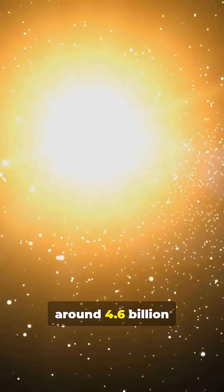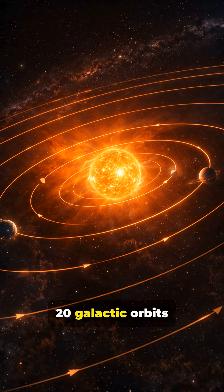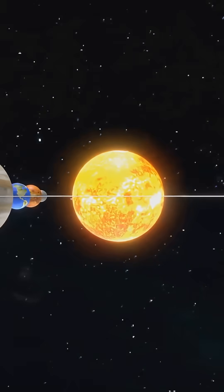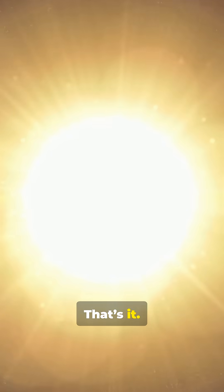Our Sun formed around 4.6 billion years ago, which means it's only completed about 20 galactic orbits so far. That's it.